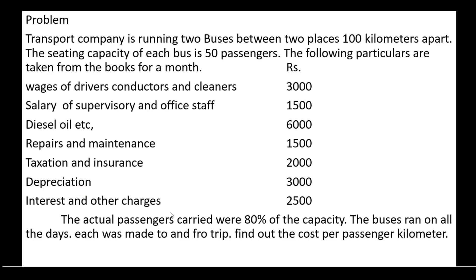These charges are classified into two types: fixed charges and variable charges. Wages of drivers, conductors and cleaners; salary of supervisory and office staff; taxation and insurance; and interest and other charges — all come under the fixed charges. Diesel oil, repairs and maintenance, and depreciation come under the variable charges. This is the operating cost sheet with fixed charges and variable charges.